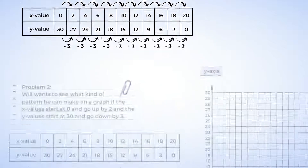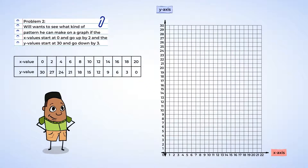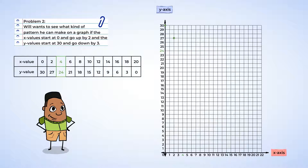Now we're ready to place these points on the graph. The first point is (0, 30) — we go all the way up to 30 on the y axis. The next point is (2, 27), so we move along the x axis to 2 and then up to 27. Next is (4, 24). Let's fill in the rest: (6,21), (8,18), (10,15), and so on.